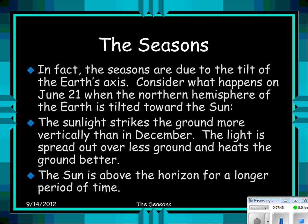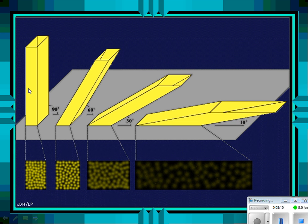The seasons are due to the tilt of the Earth's axis. On June 21st, the Northern Hemisphere is tilted towards the Sun, so sunlight strikes the ground more vertically. The light is spread out over less ground and heats it better, and the Sun is above the horizon for a longer period. In the winter, light spreads out more at lower angles and doesn't heat us up nearly as well.